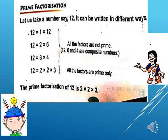See here, let us take a number, say 12. It can be written in different ways. We can write 12 as 1 multiplied by 12. 12 is also in the table of 2, so we will write 12 as 2 multiplied by 6. Then in the table of 3 it comes, so 12 equals 3 multiplied by 4. And 12 equals 2 into 2 into 3.